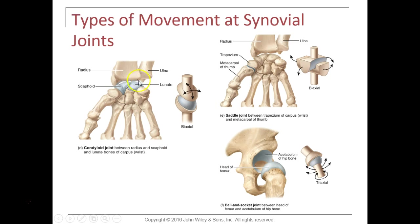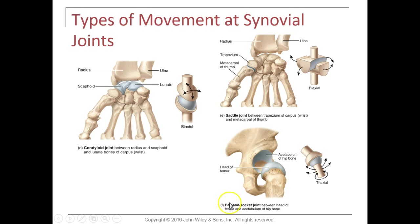The condyloid joint is between the scaphoid and the lunate in our wrist, allowing movement with slight angular movement — it's called a biaxial joint. We also have the saddle joint between the trapezium and the first metacarpal, which is also a biaxial joint allowing movement in two planes. Then we have the ball-and-socket joint — shown here as the hip joint, where the acetabulum of the os coxae receives the head of the femur. This is called a triaxial joint because it allows multiple movements in three different planes of space.